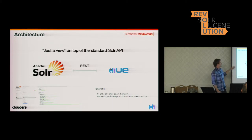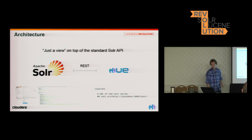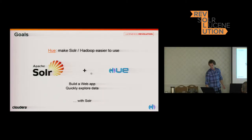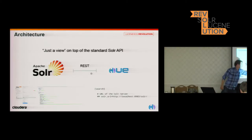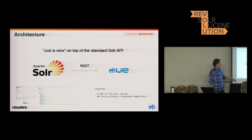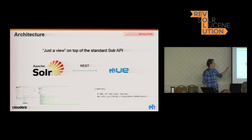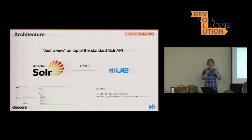Everything is based on the regular standard API, so to configure Hue you just need to put the address of the Solr host. It's a bit similar to the Solr UI — that's it. There is no custom code; we just pull from the real API. It means also if you have already your Solr setup, you can just point Hue to it and already use the UI.